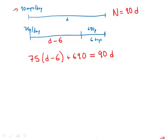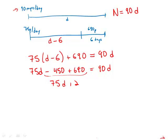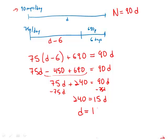So this has to equal 90D. Expanding: 75(D minus 6) gives 75D minus 450, plus 690, equals 90D. Simplifying: 690 minus 450 gives 75D plus 240 equals 90D. Subtracting 75D from both sides gives 240 equals 15D. Dividing, D equals 16.